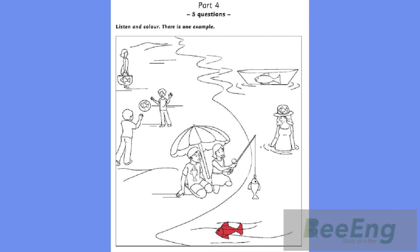5. Look at the boys. They're playing with a ball. There's a fish on it. Can I color it? Yes. Color it orange. Okay. The fish on the ball is orange. I like this picture now.